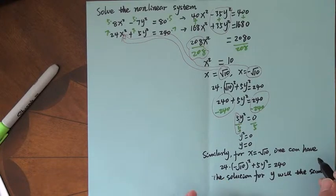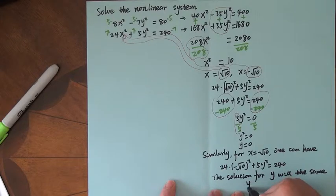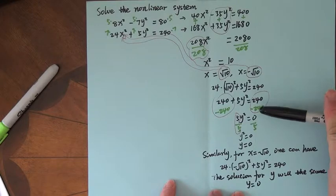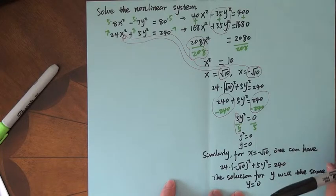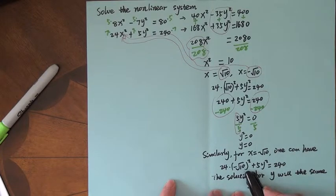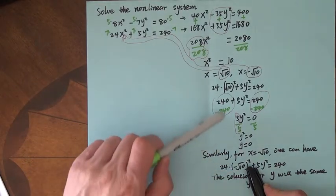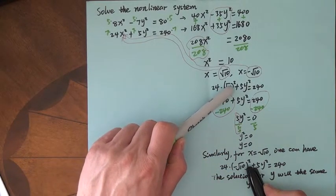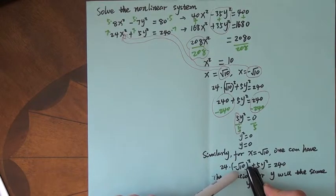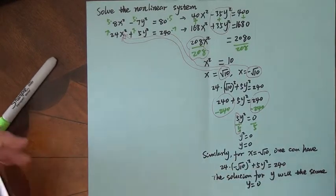Then we may find the solution for y would be the same, which is y equals 0. Because radical 10 squared is 10, positive radical 10 squared is also 10, negative radical 10 squared is also 10.